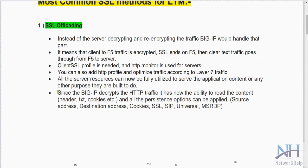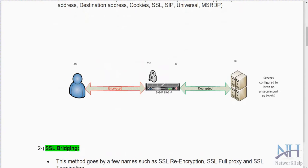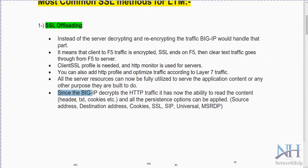Another advantage of SSL offloading is that since the Big-IP decrypts the HTTP traffic, it now has the ability to read the content from the backend server — such as headers, text, and cookies. All persistence options can then be applied, including source address and destination address persistence.